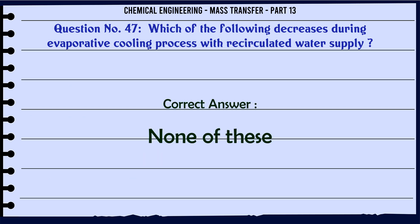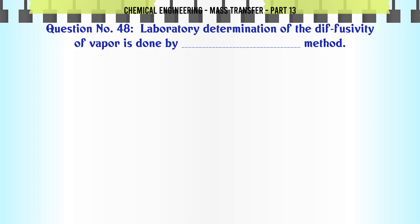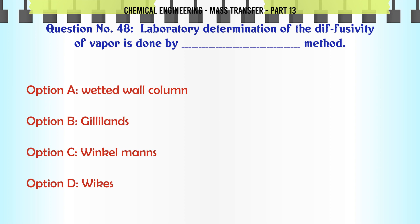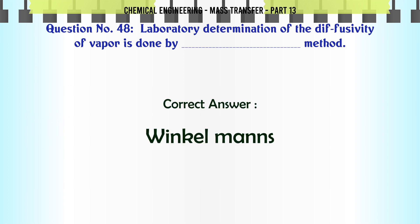Laboratory determination of the diffusivity of vapor is done by which method? A. Wetted wall column. B. Gilliland's. C. Winkelmann's. D. Weichs. The correct answer is: Winkelmann's.